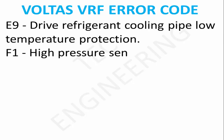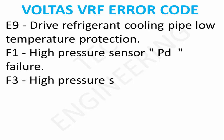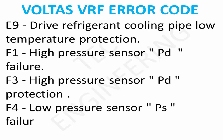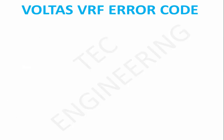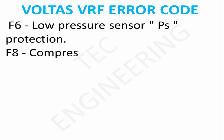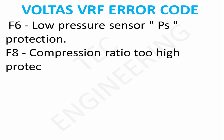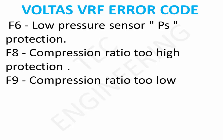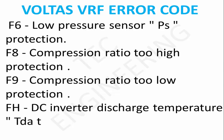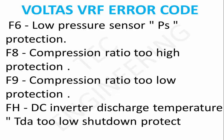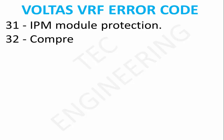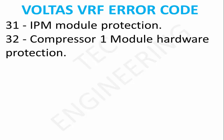F1 High Pressure Sensor PD Failure. F3 High Pressure Sensor PD Protection. F4 Low Pressure Sensor PS Failure. F6 Low Pressure Sensor PS Protection. F8 Compression Ratio Too High Protection. F9 Compression Ratio Too Low Protection. FH DC Inverter Discharge Temperature Low Shutdown Protection.